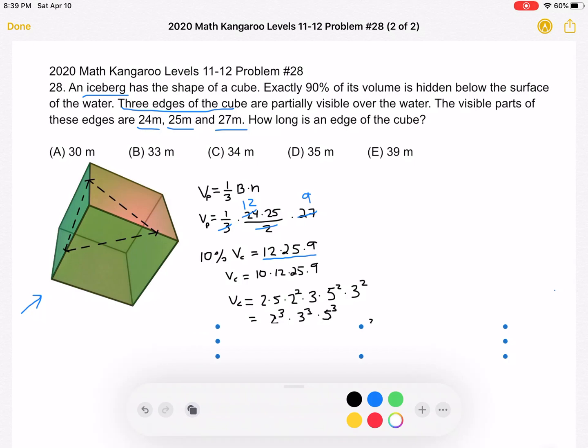So they're all to the third power. So let's let the side length of the cube be represented by A. So that means that A cubed, the volume of the cube, is 2 cubed times 3 cubed times 5 cubed, as we just said.